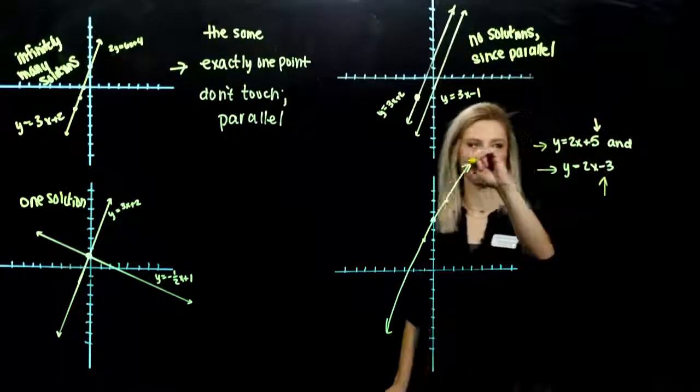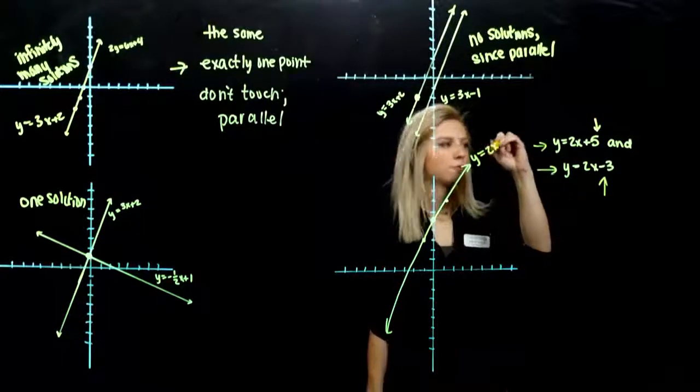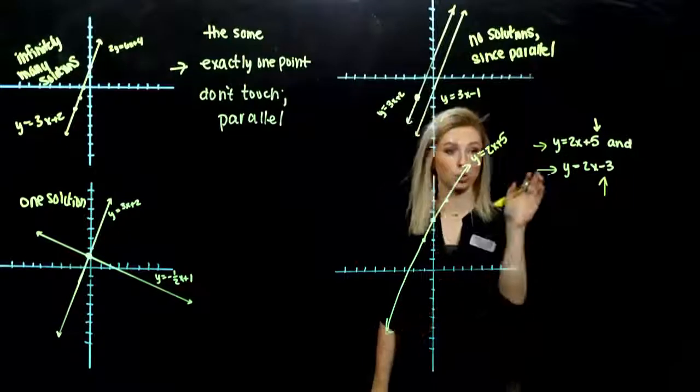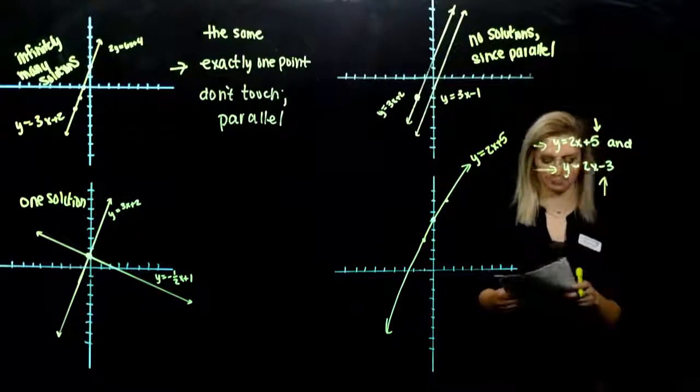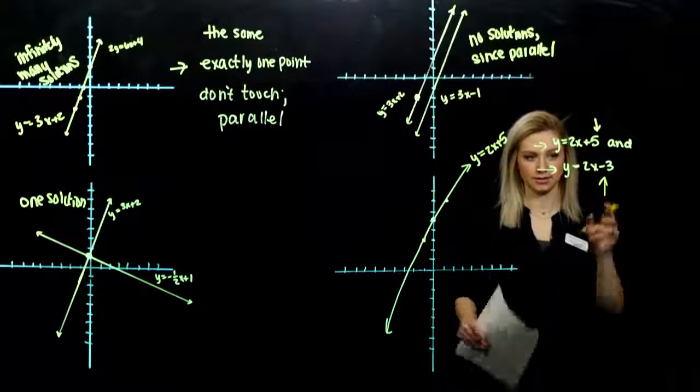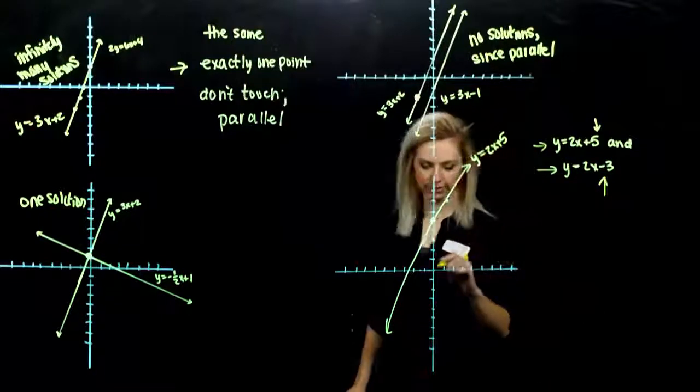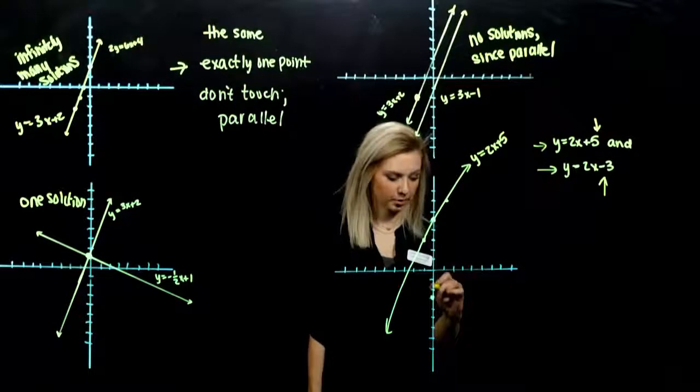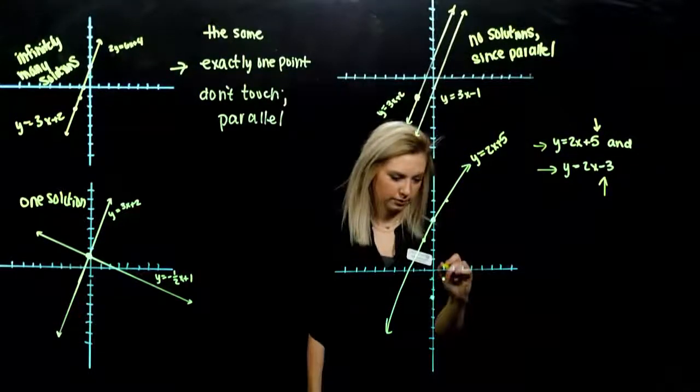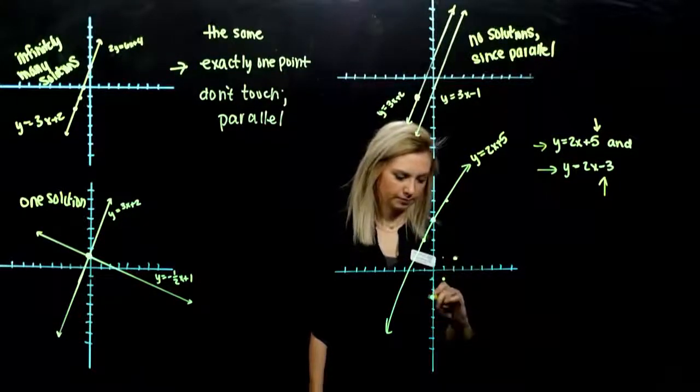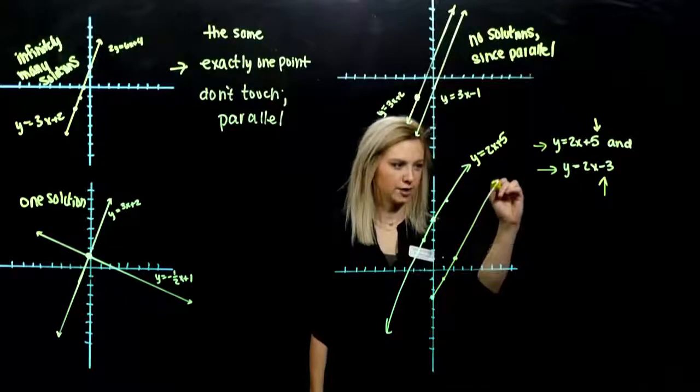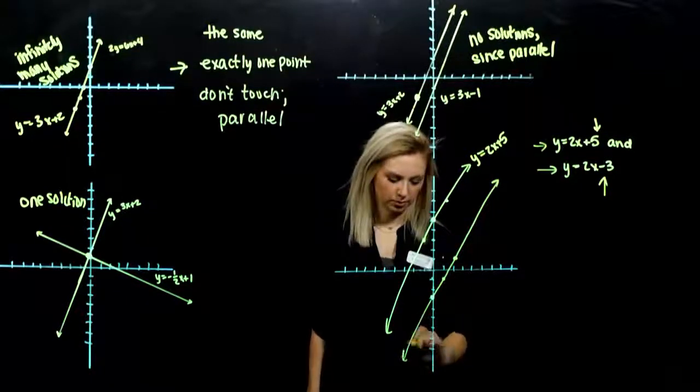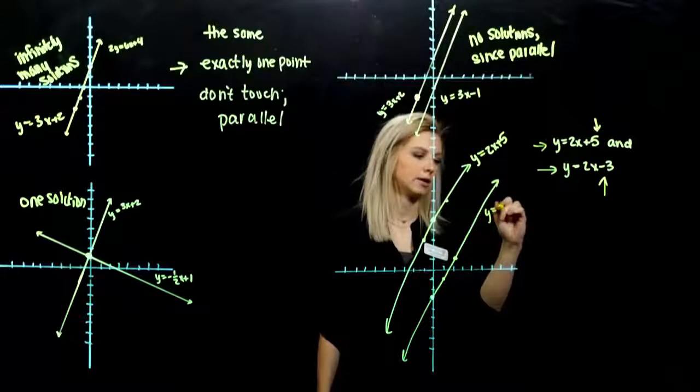And the second one. I'll always label them if we have more than one line drawn on a coordinate plane. And the second one. It's crossing through the point 0, negative 3. And from there, I'm moving the same slope. Up 2 over 1. Up 2 over 1. So with your straight edge, your pictures will be a little bit prettier than mine. But it will get the point across.